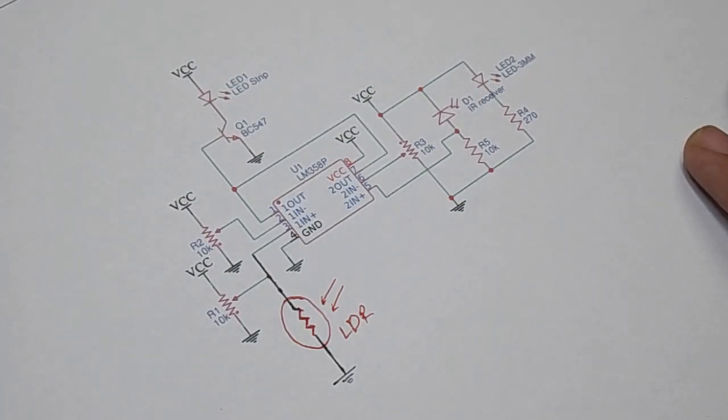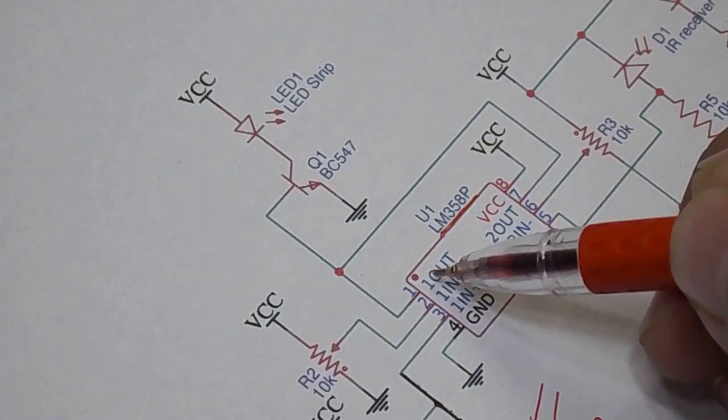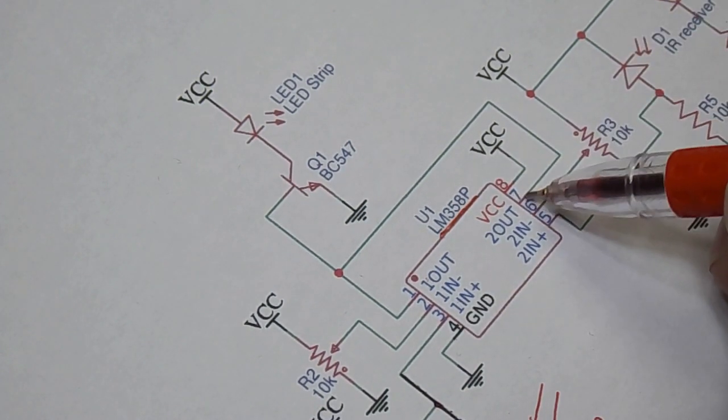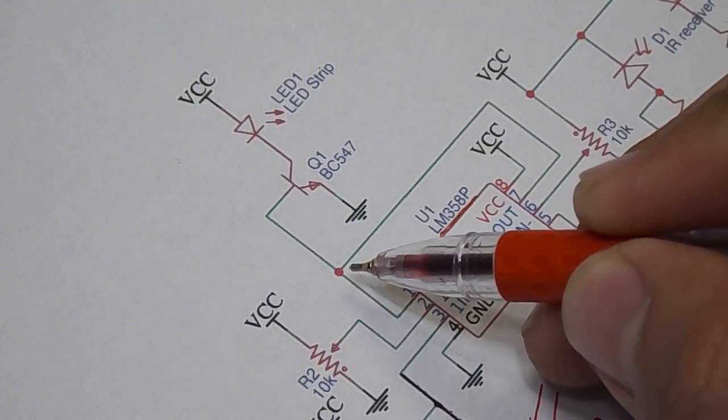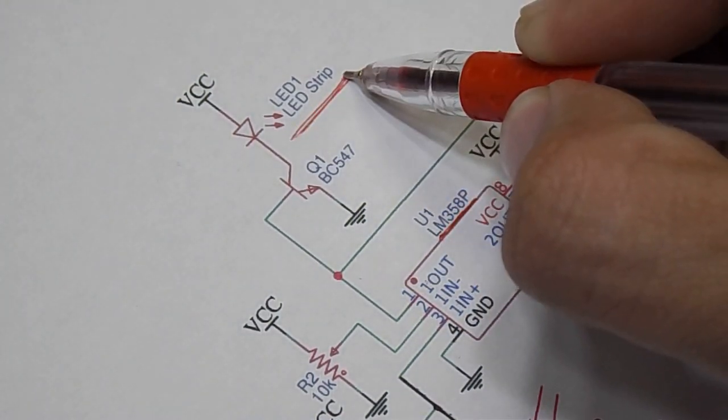For that I created this small schematic on the Easy EDA online software. Like before we have the LM358. The two outputs of IC are combined together and use a BC547 NPN transistor to act as a switch to turn on the LED strip.